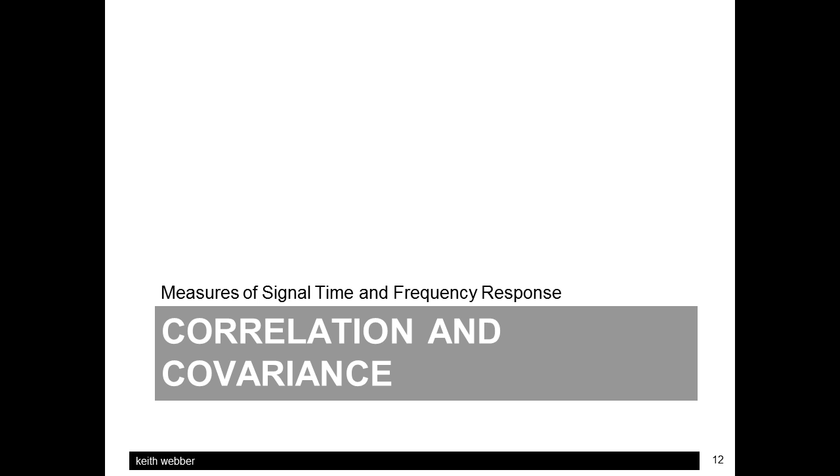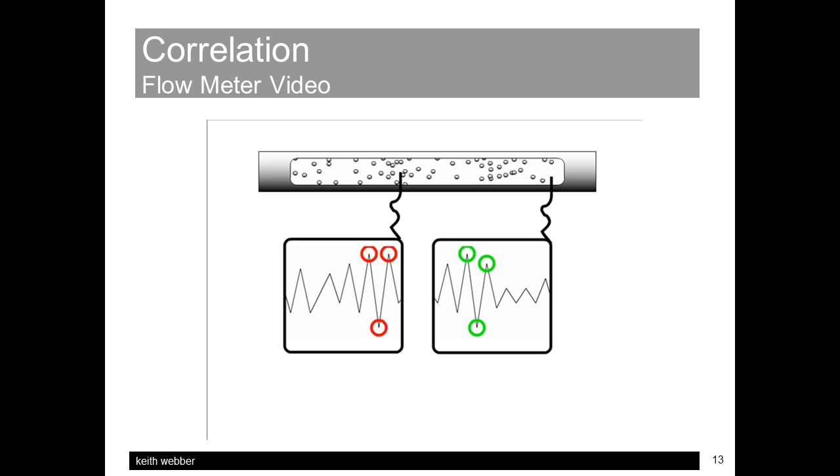We can now move on to consider measures to describe these time and frequency response characteristics of noise signals, to add to the amplitude measure of variance. Let's first look at how the signal can be characterized in the time domain by the correlation and covariance functions.